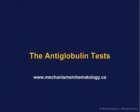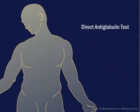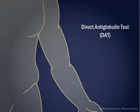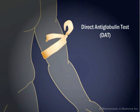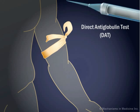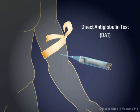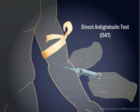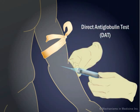The Antiglobulin Tests. The direct antiglobulin test, or DAT, is requested when immune-mediated hemolytic anemia is suspected.